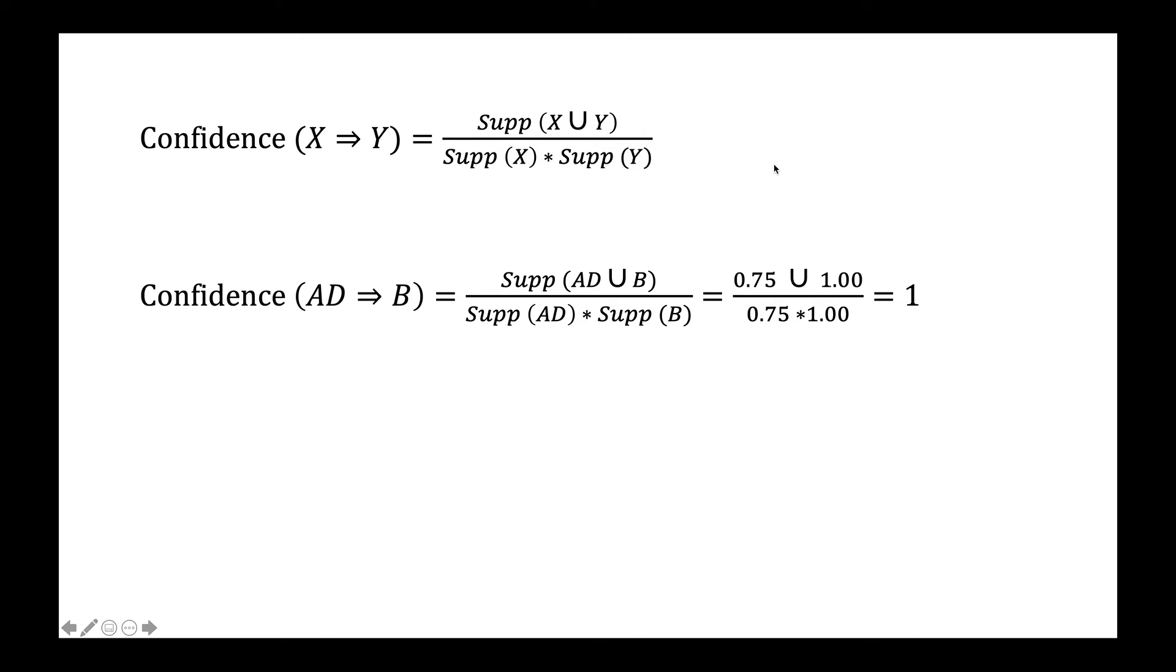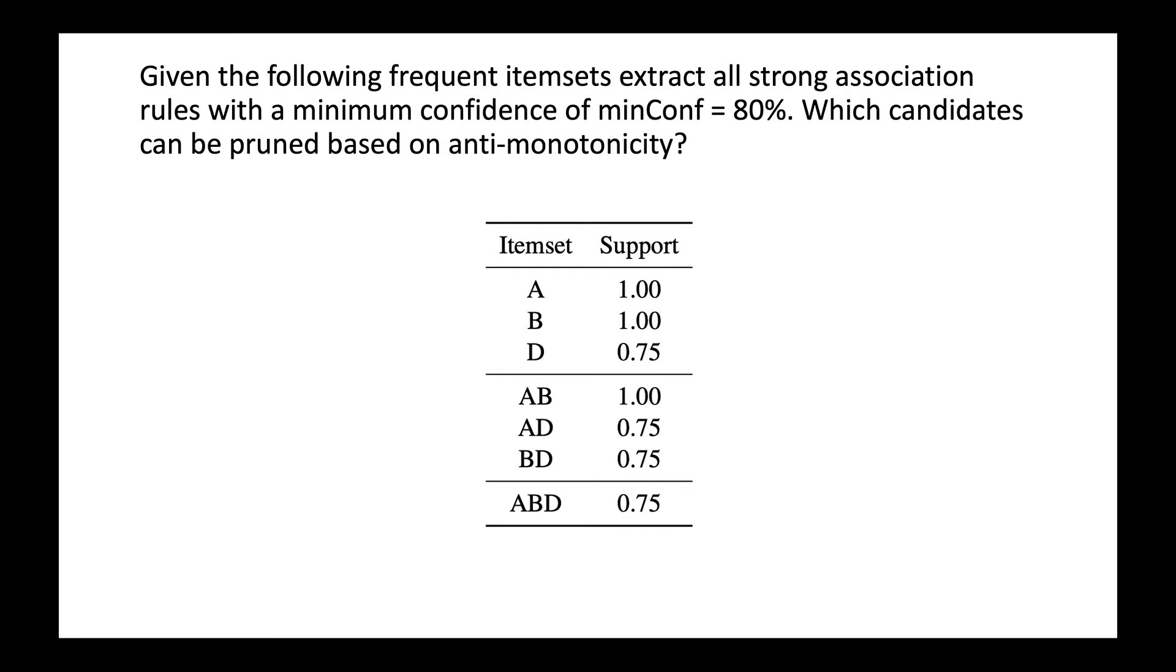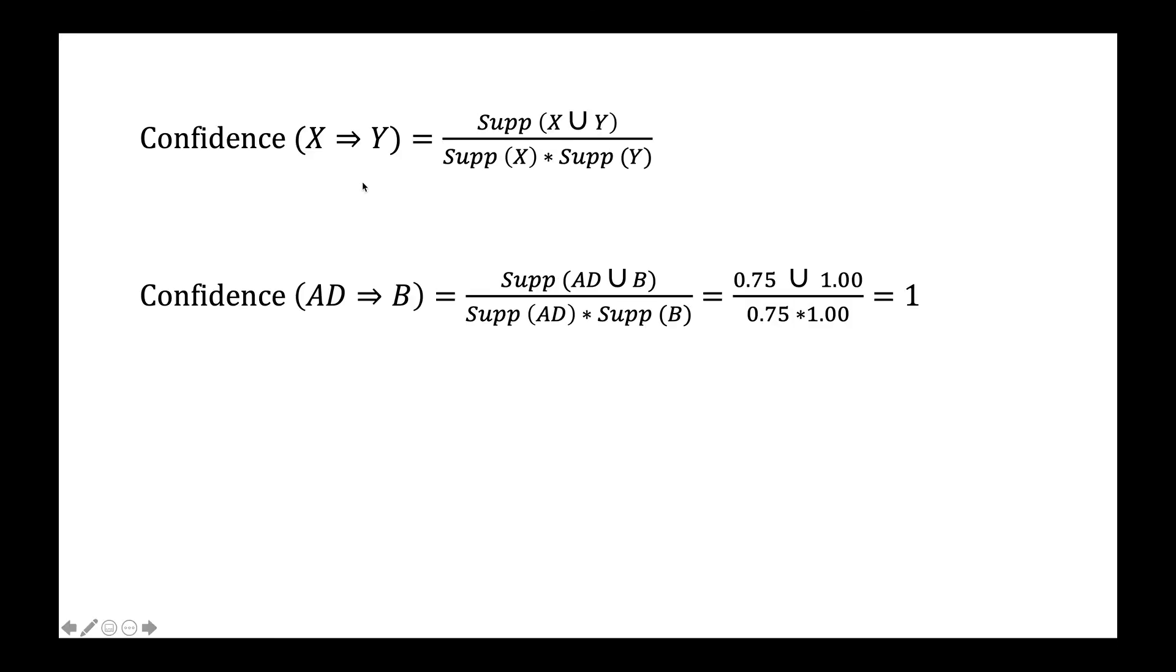That means I've taken the support of AD implying B as an example here. We basically take the unification of AD and B, and we divide by the support of AD multiplied by the support of B. This yields us 0.75, and that divided by 0.75 gives us one.